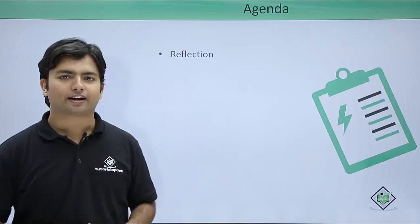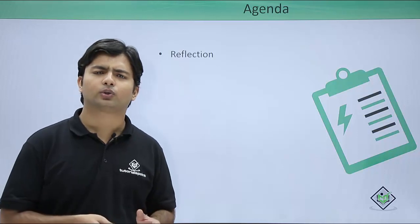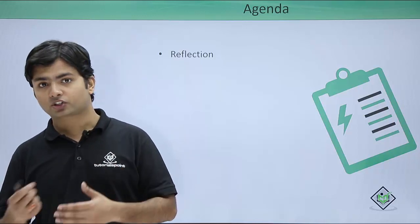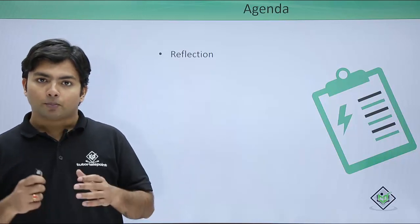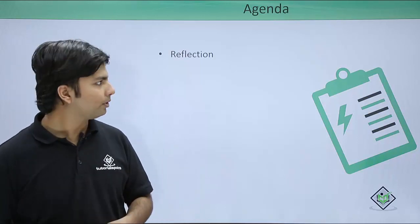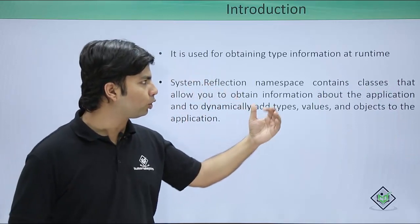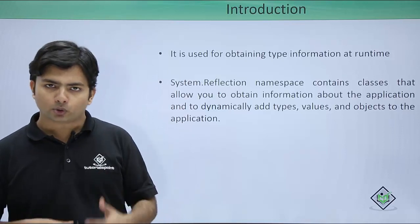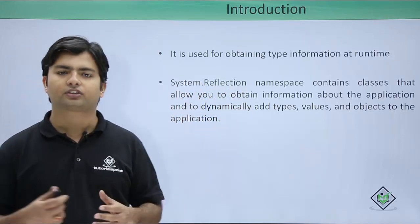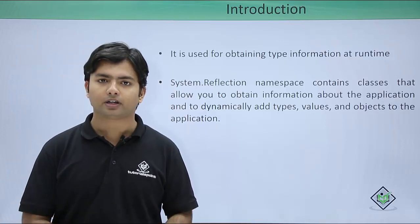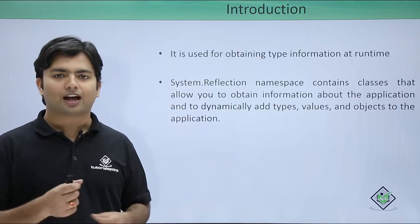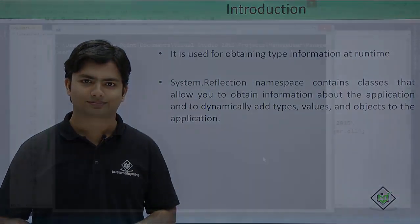In this video we are going to cover reflection. As we have already gone through some data types along with assemblies that could be private — a local copy of a DLL file — or shared, installed in the GAC. If I want to get the structure or detailed information about a particular assembly or type, we can use reflection, as it is used to obtain type information at runtime. To use reflection we go to the System.Reflection namespace, which provides classes such as ConstructorInfo, MethodInfo, ParameterInfo, MemberInfo, and PropertyInfo for getting different types of information about a type or assembly.